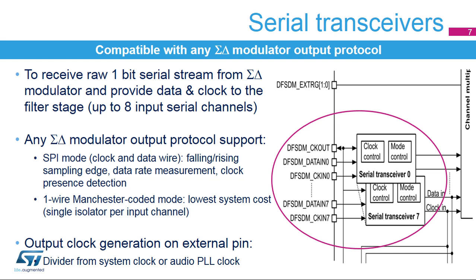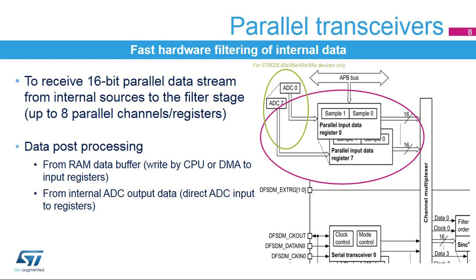The DF-SDM clock features a clock output signal to drive the sigma-delta modulator. It can be used as a source for the SPI clock input by internal interconnection in order to save external pins. The clock output has an adjustable division factor and can be driven either from the system clock or from the fine-tuned audio PLL clock. Parallel transceivers provide parallel inputs from internal data sources, for example from memory buffers. Parallel inputs are usually used for fast hardware filtering of internal data from the ADC or any data collected from a communication peripheral. Data can be written to the DF-SDM parallel input registers by the CPU or DMA configured in memory-to-memory transfer mode. For STM32L45X, 46X, 49X, and 4AX devices, the internal analog-to-digital converters provide parallel data directly to the DF-SDM parallel input registers.